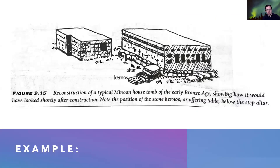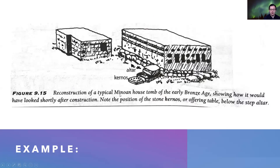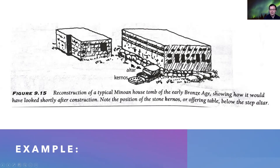Here is a reconstruction of what these house tombs looked like — relatively small, with entrances around the side and an altar and kernos outside. This is a reconstruction of a typical Minoan house tomb of the early Bronze Age, showing how it would have looked shortly after construction. Note the position of the stone kernos — or offering table — below the step altar, which is where you would leave offerings to the dead, showing evidence of votive offerings and a mortuary cult.